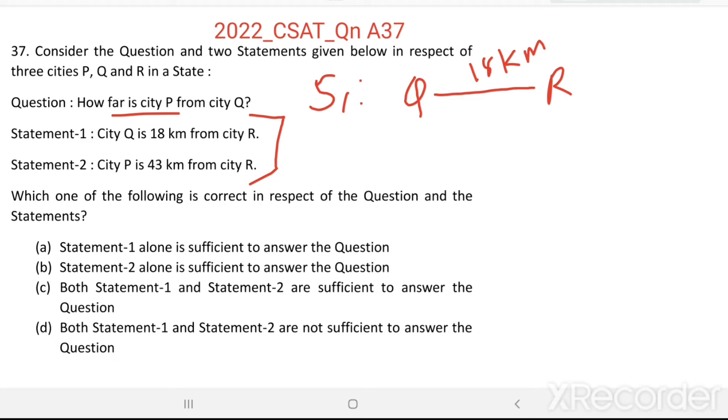So, from statement 1, we can't find what is the distance between city P and Q. Therefore, statement 1 alone is sufficient to answer the question. We can eliminate this option.